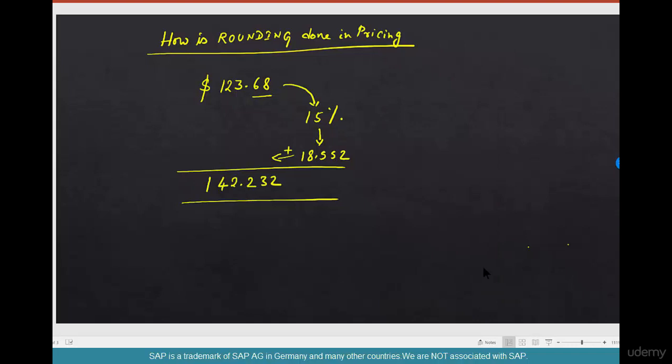142.232. Right, now we said we are going to round it down or round it up to two decimals. So how is this going to be rounded? This is going to be approximated to 142.23, because 2 is less than 5, so it rounds down. If this were 7, let's say, this would have been 142.4. This is rounding up versus rounding down.